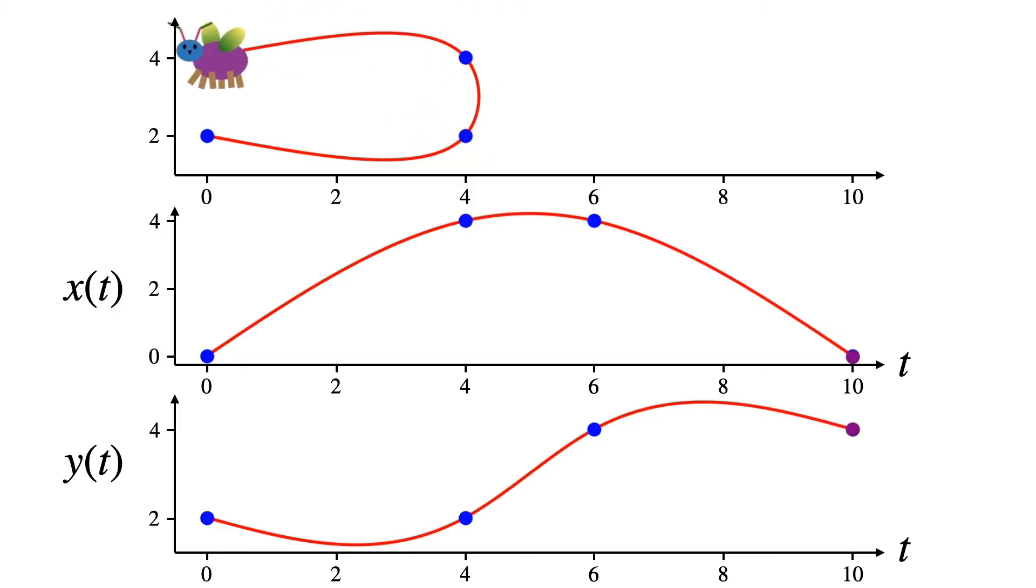Now one big advantage of representing splines separately in X and Y is that you can control timing better. Suppose that we want our bug to fly faster for the last segment.